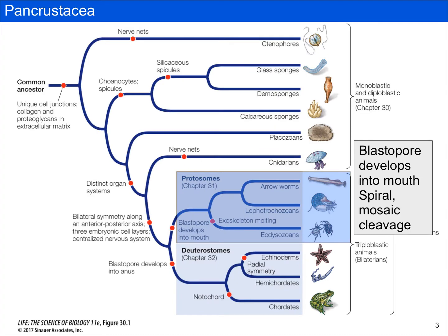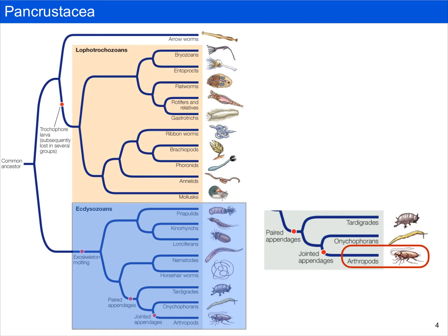Recall that on the metazoan phylogeny, we are within the protostomes group. Protostomes are part of the bilateria, and they're characterized by having a blastopore that develops into the mouth, and many have spiral mosaic cleavage. Remember, arthropods don't have spiral mosaic cleavage — they are an exception. If I zoom in on the phylogeny of protostomes, we can see that we are in the ecdysozoa group. Ecdysozoans shed an external cuticle or exoskeleton, and arthropods are one of the lineages within them. We don't really ever talk about tardigrades or onychophorans, but if you look closely at the ecdysozoan lineage, we do spend some time talking about nematodes.